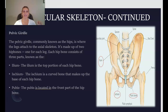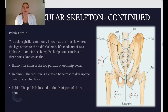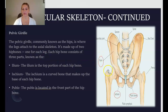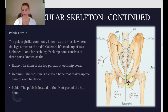Continuing with the appendicular skeleton, we have the pelvic girdle, commonly known as the hips, which is where the legs attach to the axial skeleton. It is made up of two hip bones, one for each leg. Each hip bone consists of three parts: the ilium, the ischium, and the pubis bone, which is located in front of the hip bone.